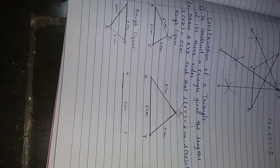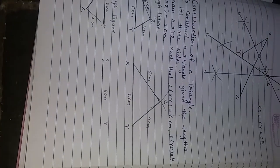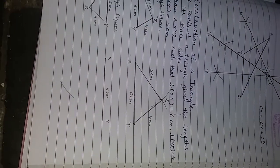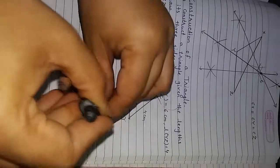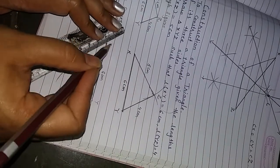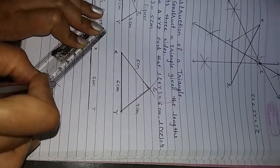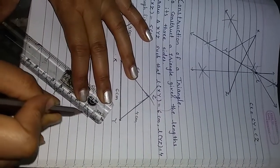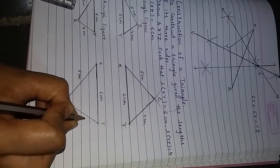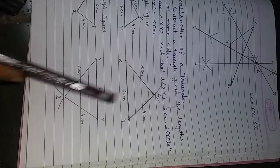Take the 5 cm distance in your compass for XZ. Make one arc, then take 4 cm distance in your compass and make an arc. This gives our point Z. This is 5 cm. Both diagrams are correct.